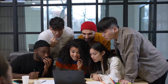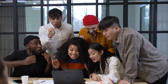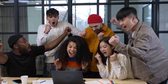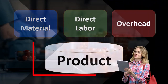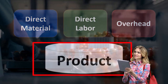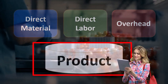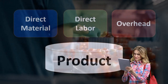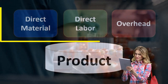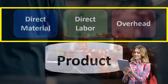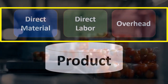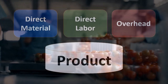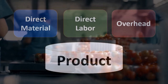When considering prime costs and conversion costs, we are looking at the cost of production — production costs as opposed to period costs. When considering production costs, we always think about direct materials, direct labor, and overhead. This should always come to mind when we think about production.